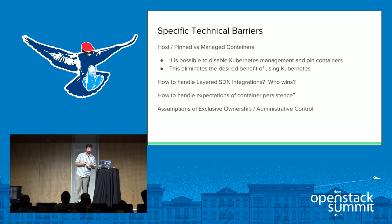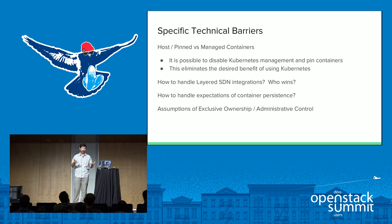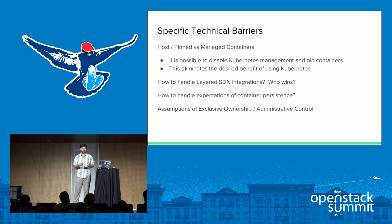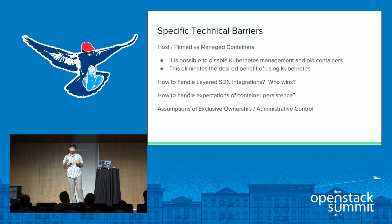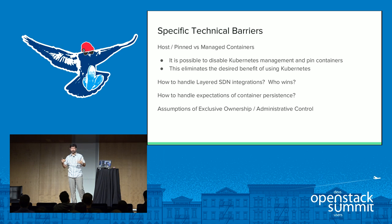We also have the assumption of exclusive ownership and administrative control. You have to be able to say you don't control where this service is and where it's going — that's the first thing you give up when you start using a Kubernetes containerized type of infrastructure. You're giving up control of starting and stopping that container.